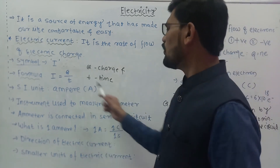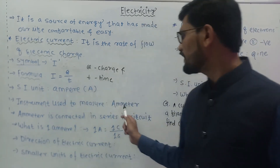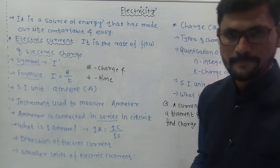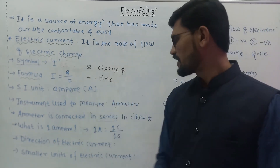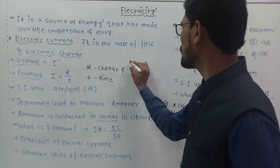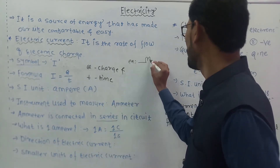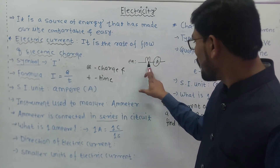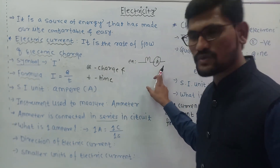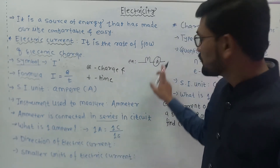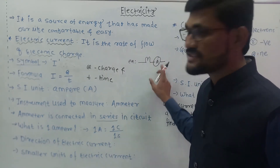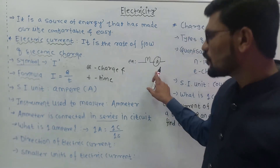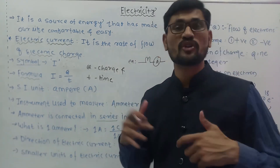When we have this device, how do we connect it in a circuit? The ammeter is always connected in series in a circuit. For example, if there is one lamp, we connect the ammeter in series with it — one after another. If we connect the ammeter across the bulb instead, it will not measure electric current. To measure current, it must be connected in series.